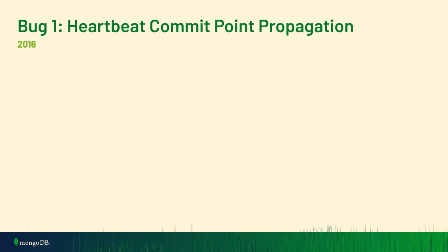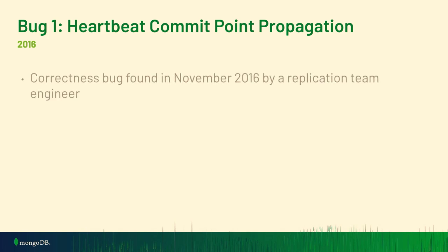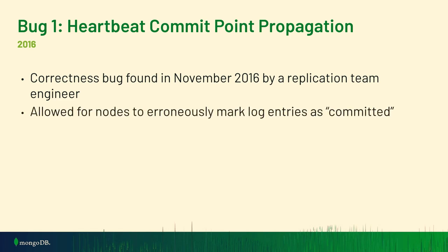This first bug has to do with heartbeat commit point propagation. It was a correctness bug found in 2016 by a replication team engineer. It allowed nodes to erroneously mark log entries as committed. When you move the commit point to a certain point you're claiming that a log entry is durable. The consequence is that a client could read data it thinks is durable even if it actually is not.